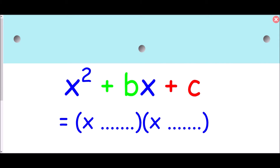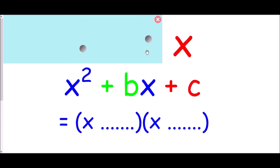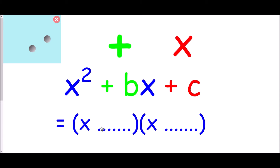The question is: how do we decide what goes in those brackets? It all comes down to the two values colored in green and red. What we're looking for is a pair of numbers which will multiply to make the value at the end — the plus c — but they must also add to make the number in the middle — the plus b. If you can find a pair of numbers which multiply to make the end and add to make the middle, those are the values that go inside your two brackets.